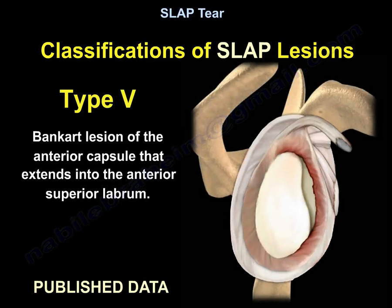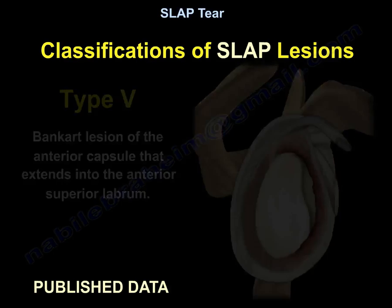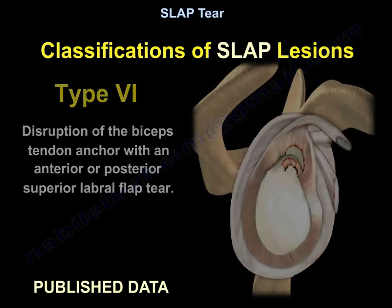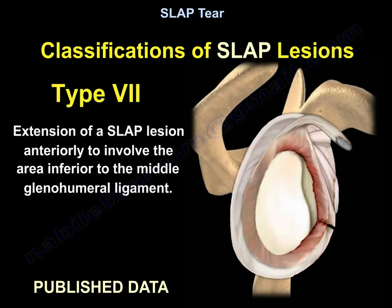Type 5 is a Bankart lesion of the anterior capsule that extends into the anterior superior labrum. Type 6 is disruption of the biceps tendon anchor with an anterior or posterior superior labral tear. Type 7 is extension of the SLAP lesion anteriorly to involve the area inferior to the middle glenohumeral ligament.